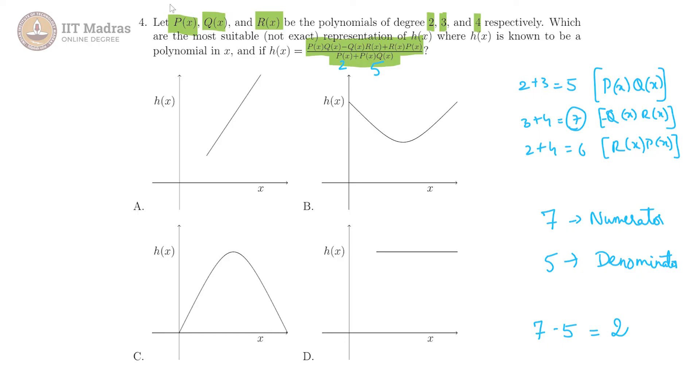h of x is a quadratic and that would indicate p and c are possibly the curves because these look like quadratic curves. a and d are definitely straight lines.